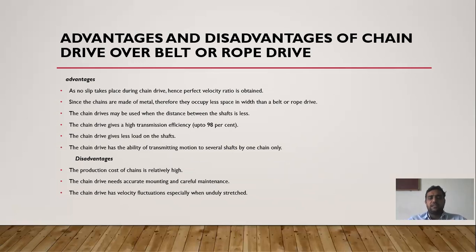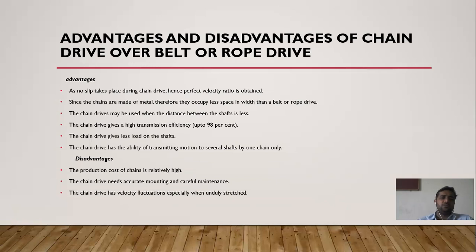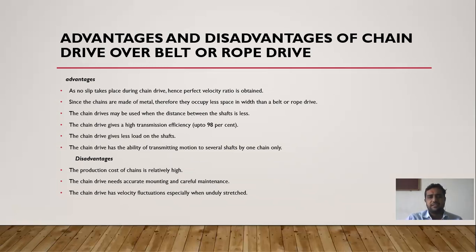Disadvantages of chain drive: The production and cost of chains is relatively high because they are made from metal. The chain needs accurate mounting and careful maintenance, since the sprockets must mesh precisely with each other. The chain drive has velocity fluctuation, especially when the chain is unduly stretched, causing jerk — as observed in bicycles and motorcycles.